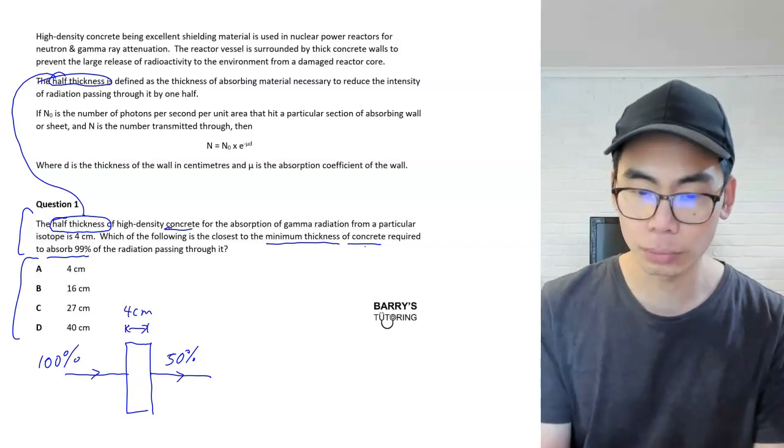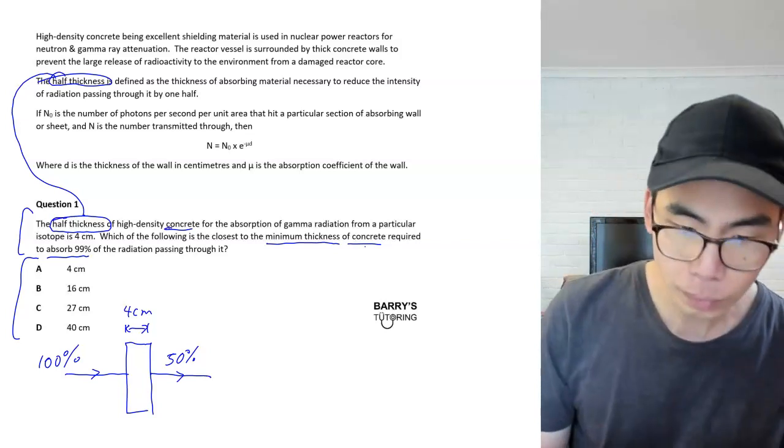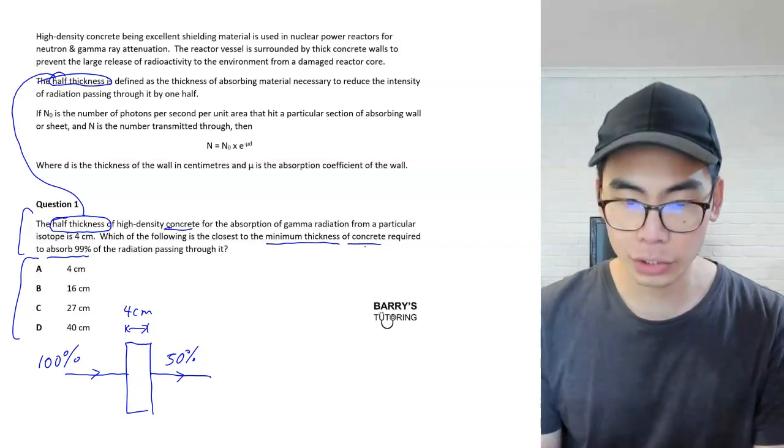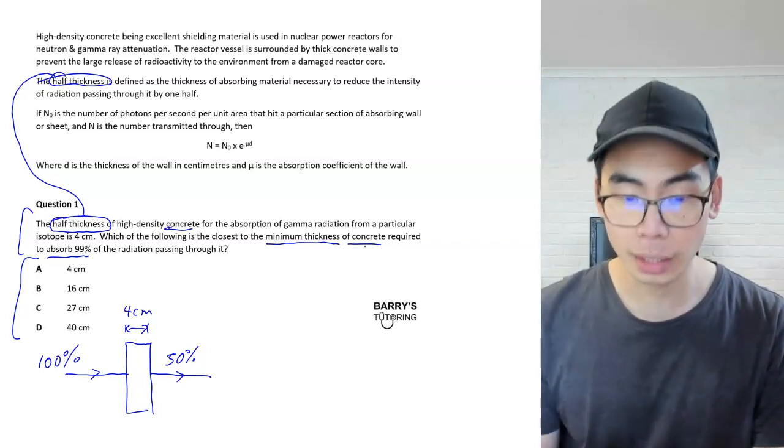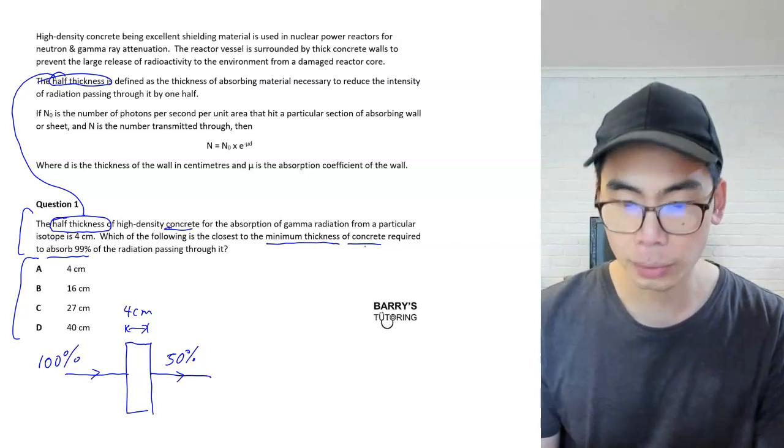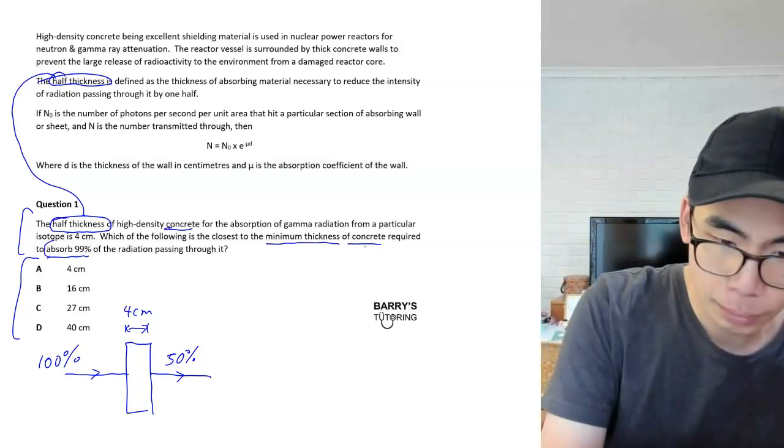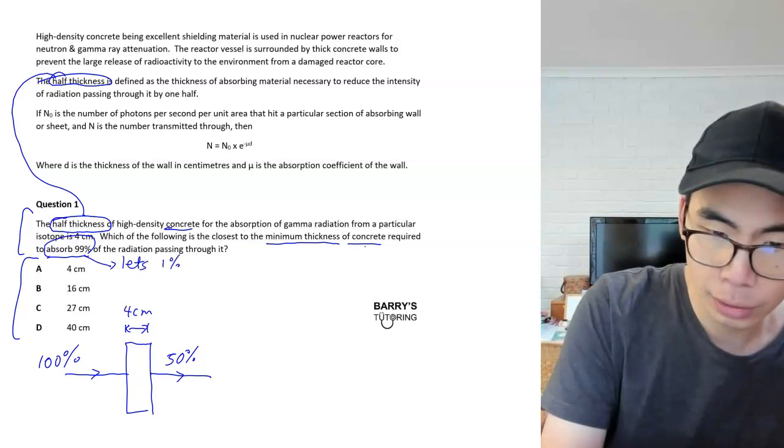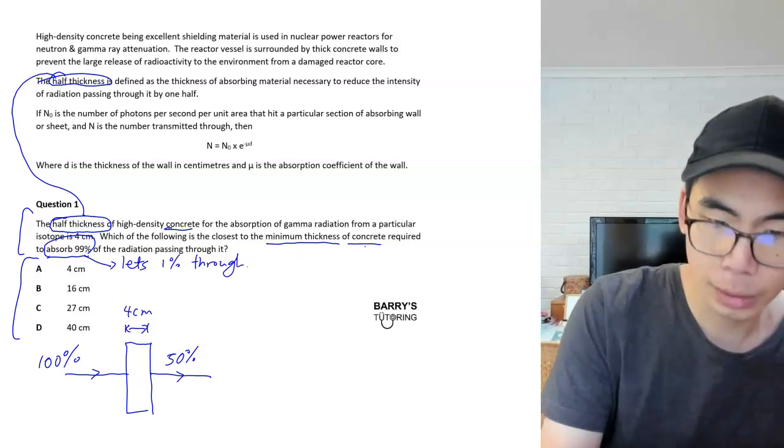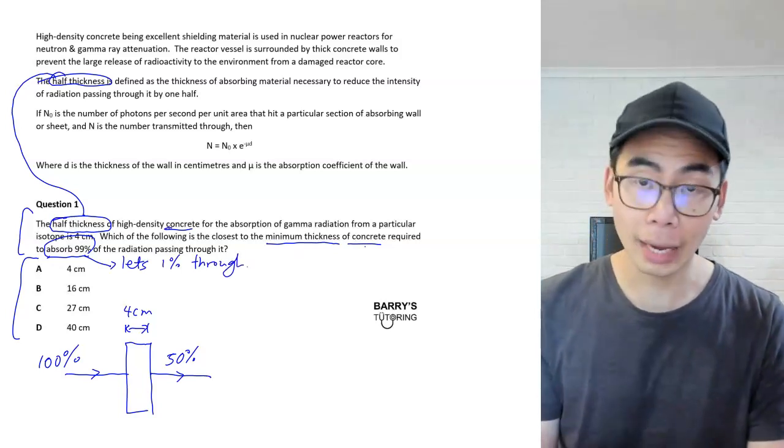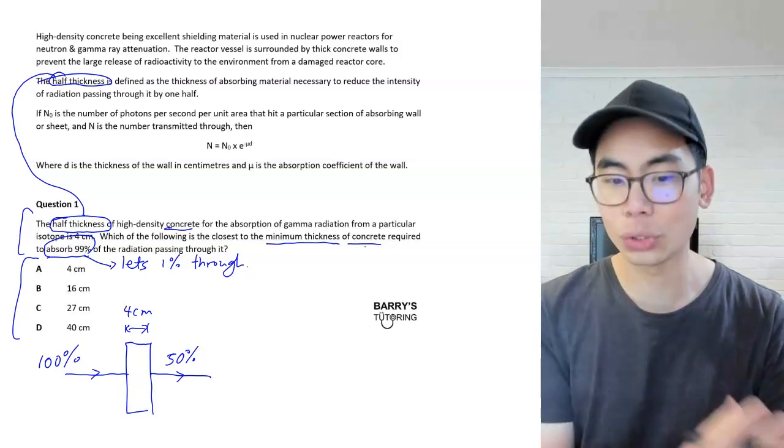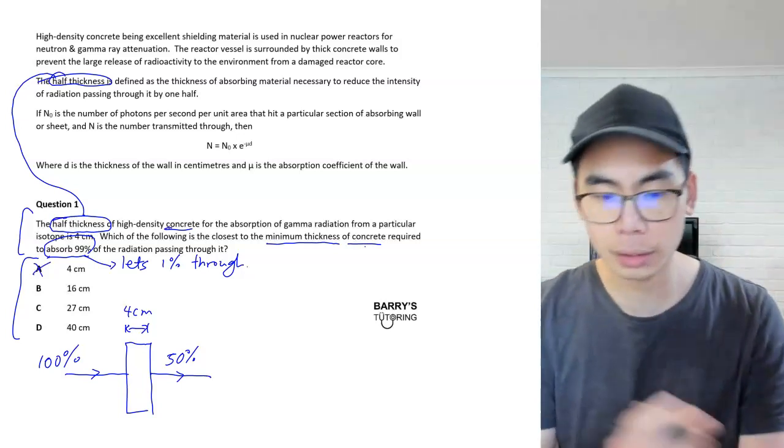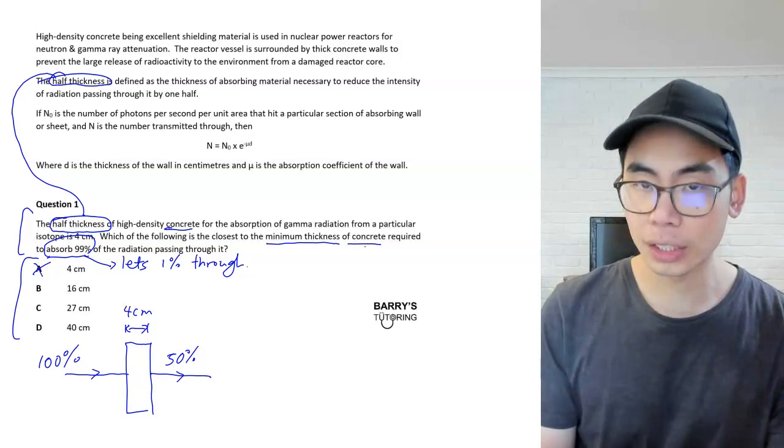This is all we need to solve this problem, we don't need to use the equation. We want, in this particular question, if we go back to the condition now, we want it to be able to absorb 99% of the radiation. Another way of actually writing this is to say that it lets 1% through. I hope you can see that it's not going to be A, four centimeters of concrete is going to let 50% through. So how can we solve this? We can just keep on adding four centimeters of thickness.